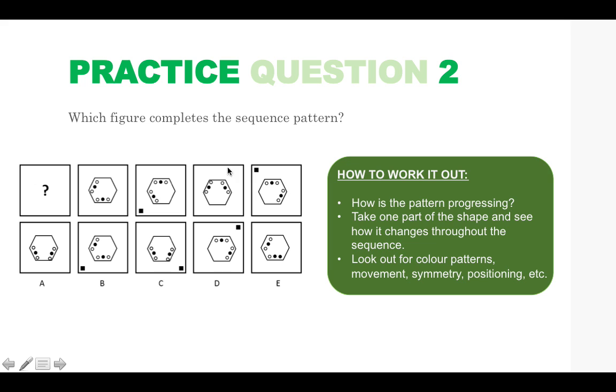You can see that these dots are moving one space around the hexagon. So that space there is blank, that space there is blank, that space there is blank and that space there is blank. So you know that this one in order to work backwards, the next blank space is going to be at the bottom because you're working one space anticlockwise. So we can automatically eliminate answer B and D and E. So our possible answer options are A and C.